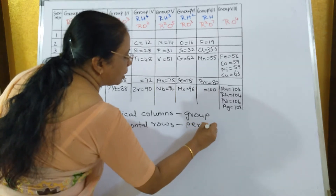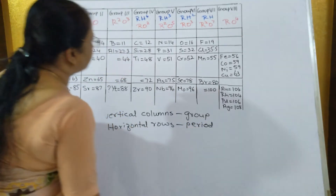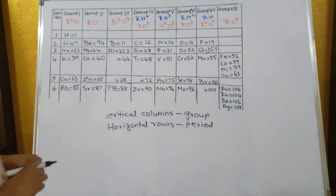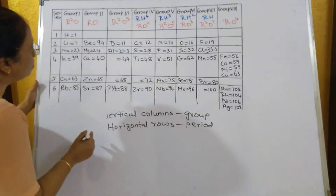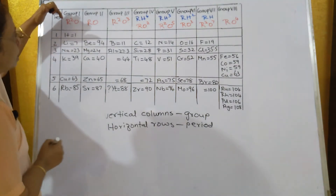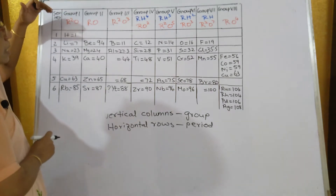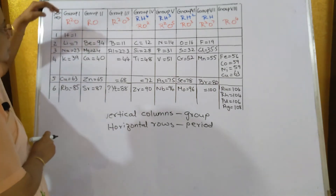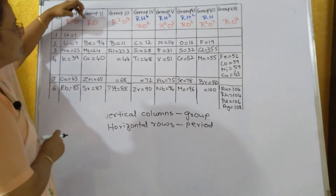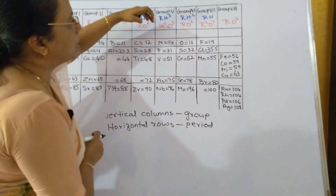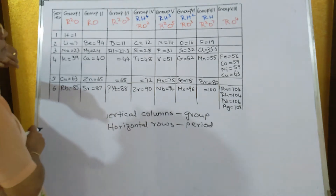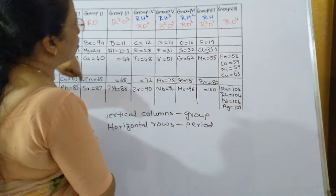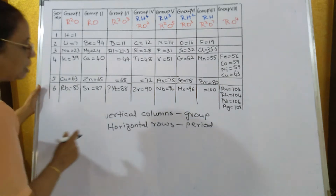From this table he observed that every element with the same chemical properties repeats after a definite interval. Whatever is written in red color are the molecular formulas of the oxides of the elements, and whatever is written in blue are the molecular formulas of the hydrides of the elements.